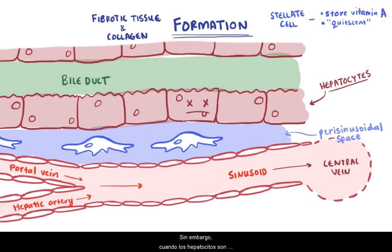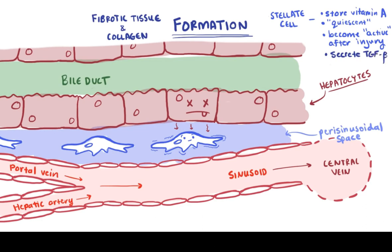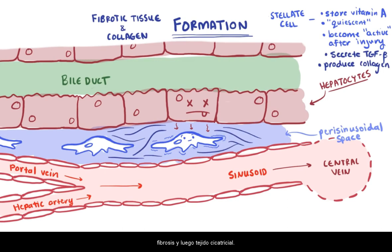When hepatocytes are injured, they secrete paracrine factors that activate and change the stellate cells. When activated, these stellate cells lose vitamin A, proliferate, and start secreting transforming growth factor beta-1 (TGF-beta), which then causes them to produce collagen — the main ingredient in extracellular matrix, fibrosis, and then scar tissue.